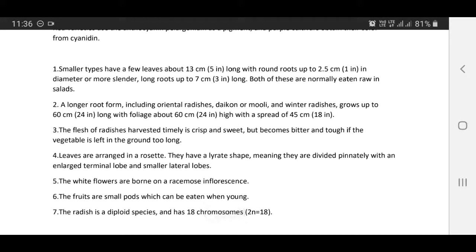A longer root form including oriental radishes, daikon or mooli, and winter radishes grows up to 60 cm (24 inches) long with foliage about 60 cm (24 inches) high with a spread of 45 cm (18 inches).